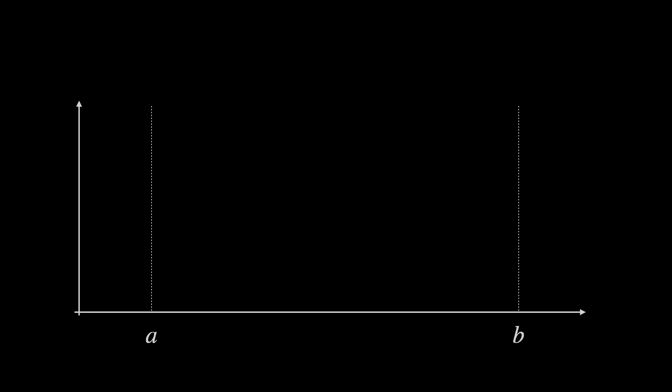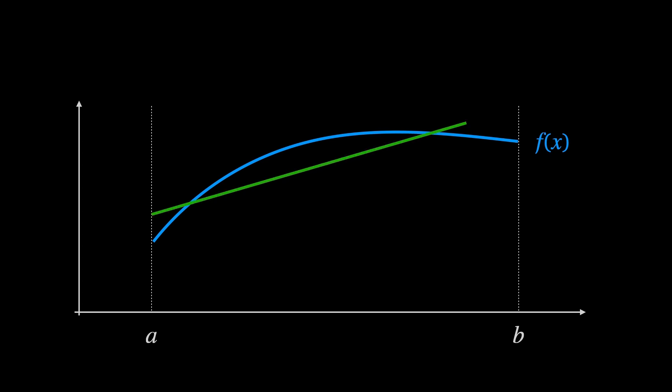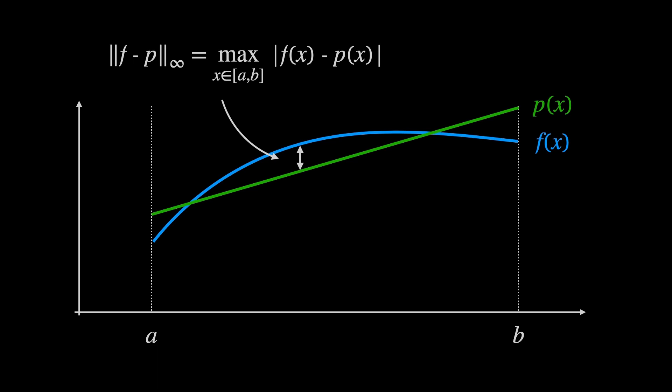Minimax approximation is a particular method for approximating functions. Given a function f(x) over the real interval from a to b, we want to find an approximation p(x) — typically a polynomial. Minimax approximation is the process of finding the approximation which minimizes the maximum difference between f(x) and p(x) across the given interval. This is known as the l-infinity norm, also called the supremum norm, uniform norm, or max norm.